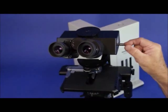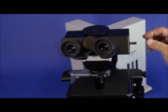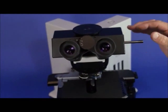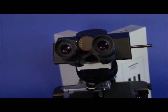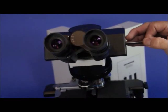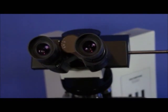When the knob is pushed all the way in, you have 100% of the light to the eyepieces. When it's in the second position, you have 20% of the light to the eyepieces and 80% of the light to the camera. When it's pulled all the way out, you have 100% of the light to the camera.